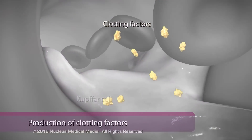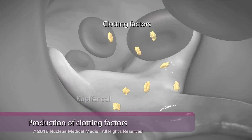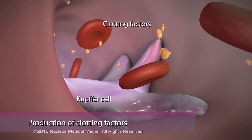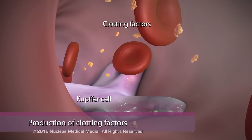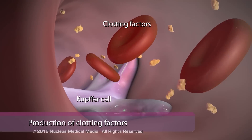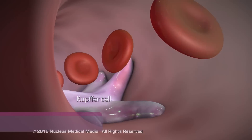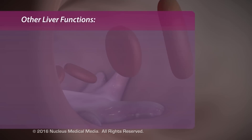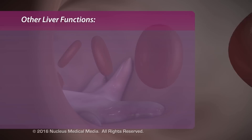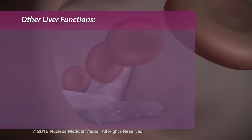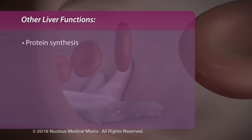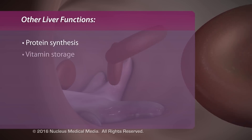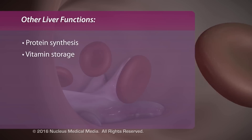Hepatocytes also produce blood clotting factors to prevent hemorrhage. Other vital functions performed by the liver include protein synthesis and vitamin storage, and the breakdown of old red blood cells.